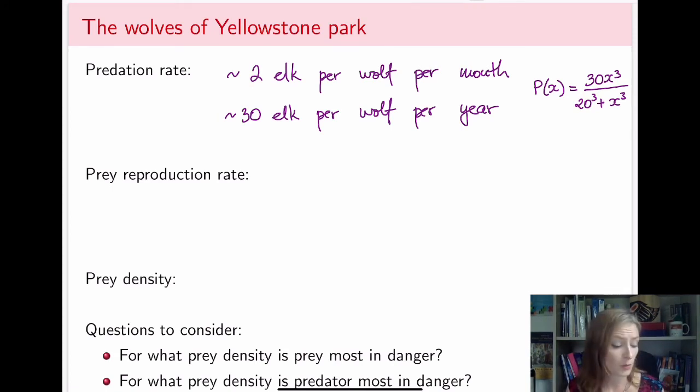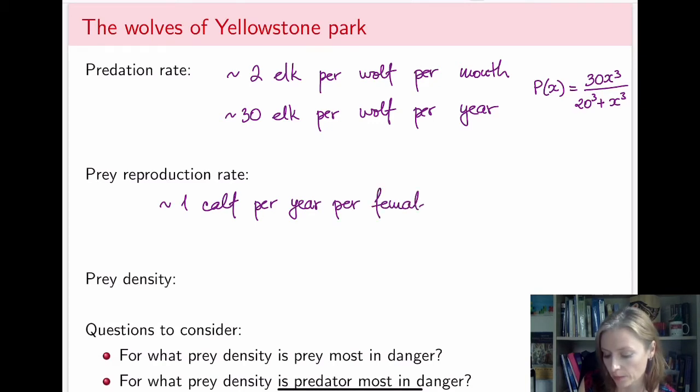we know that every female over one-year-old will produce approximately one calf a year. So approximately one calf per year per female.